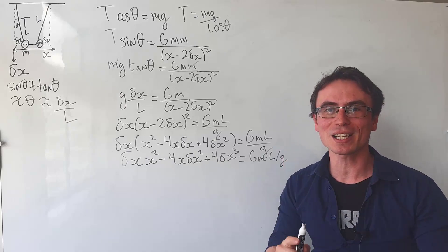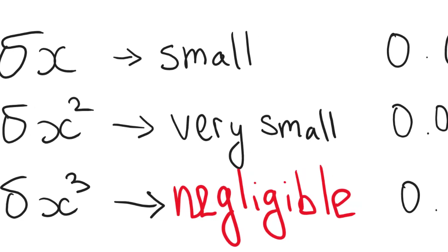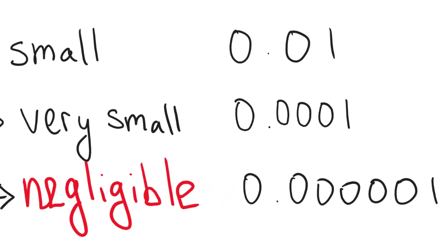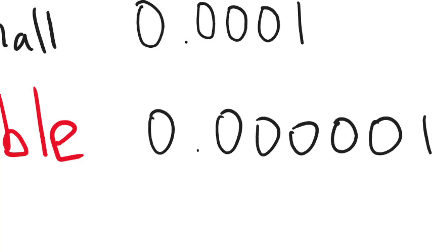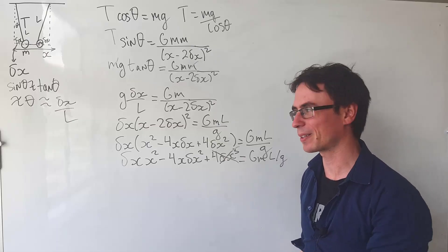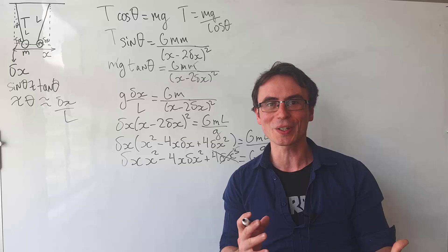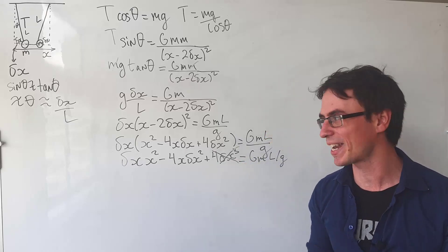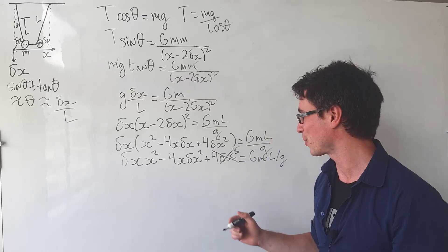Multiplying out, we get delta x times x squared minus 4x delta x squared plus 4 delta x to the power of 3 is equal to gml over g. This term right here will be negligible in our approximation. Imagine that you have a small value, say 0.01. If you were to cube it, you would get a very, very small value indeed. So we can cross it out. This is already starting to look like a quadratic equation.